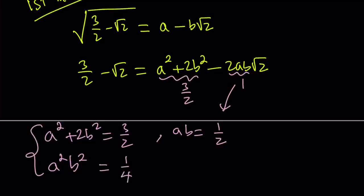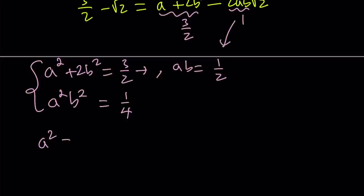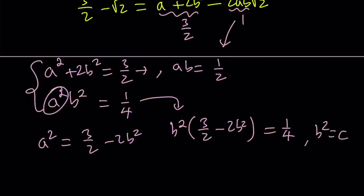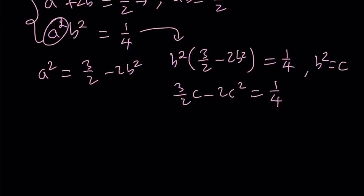This is a system in two variables, and we can turn it into a quadratic equation. We can isolate a² from the first equation, write it as 3/2 minus 2b², and plug it into a²b² = 1/4. That gives us b² times (3/2 minus 2b²) equals 1/4. Setting b² equal to c, we write this as (3/2)c minus 2c² equals 1/4. Multiplying both sides by 4, we get 6c minus 8c² equals 1. So, 8c² minus 6c plus 1 equals 0.